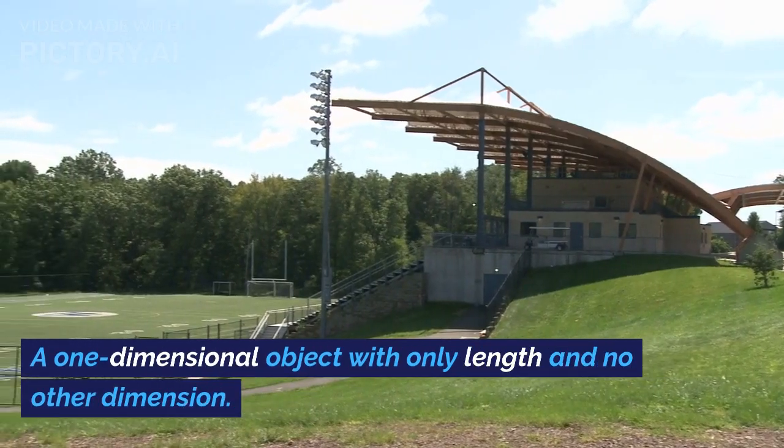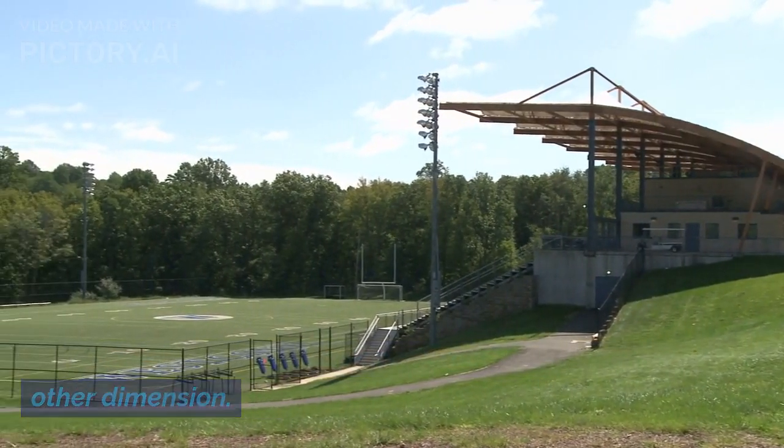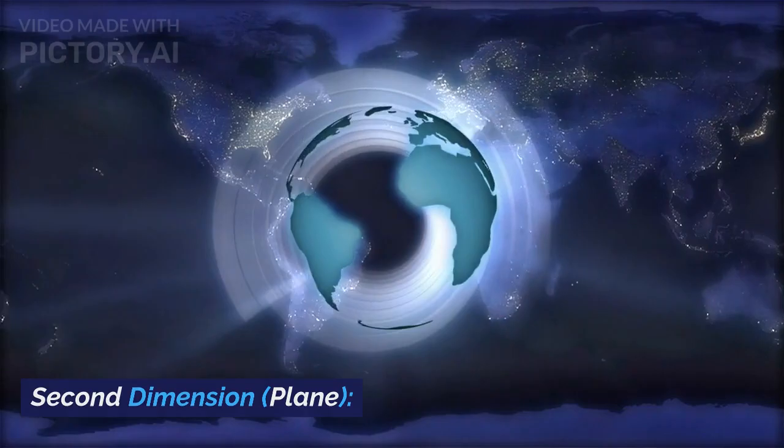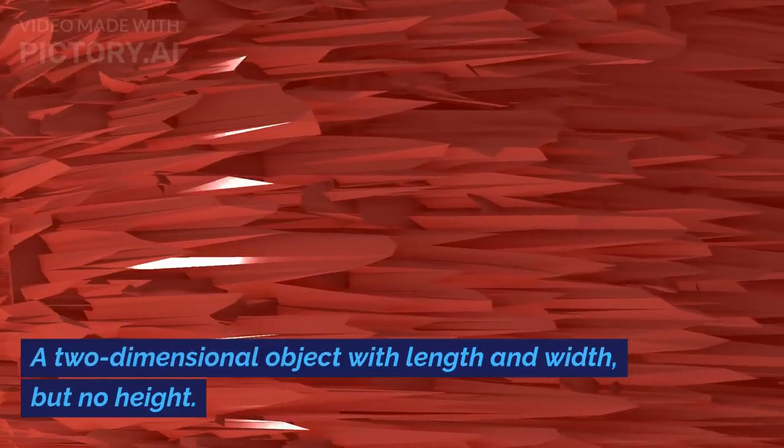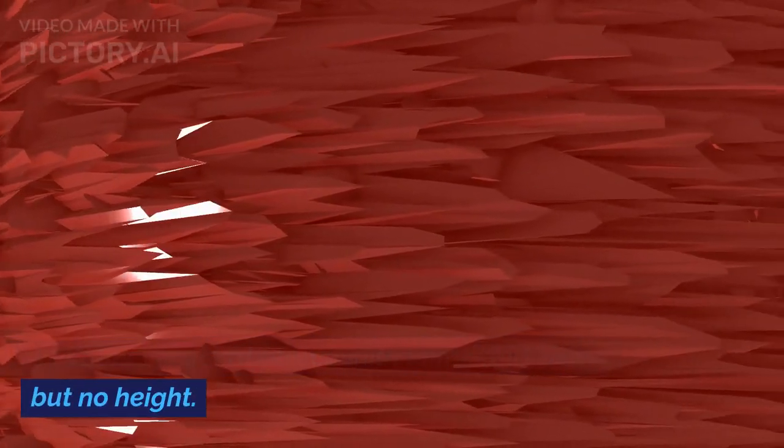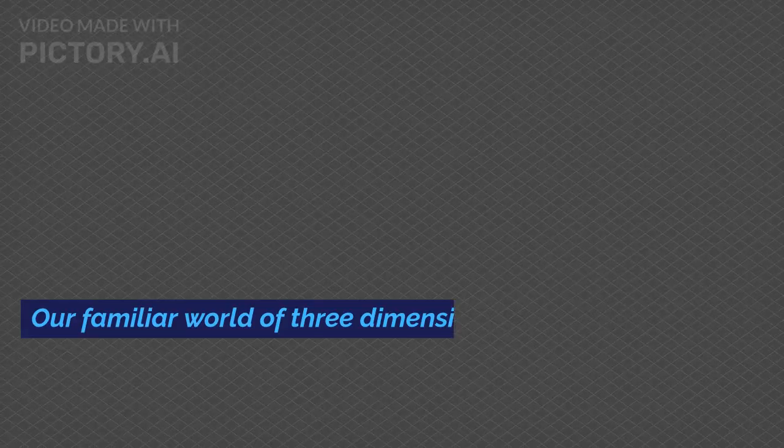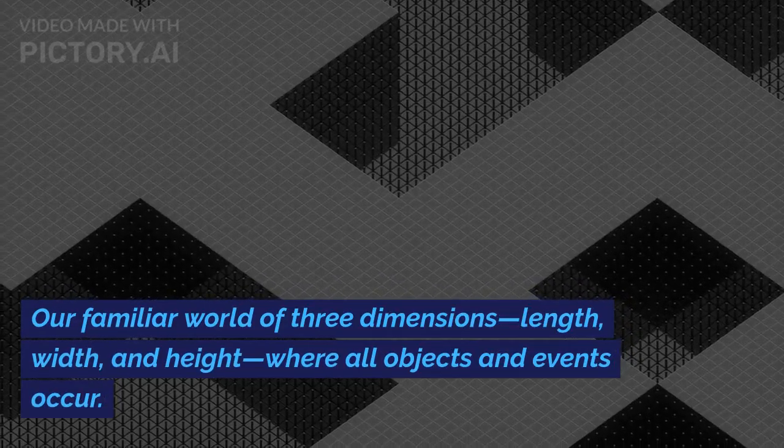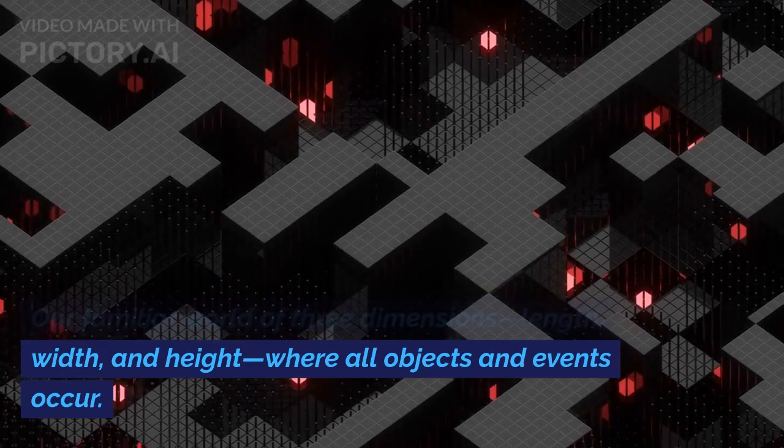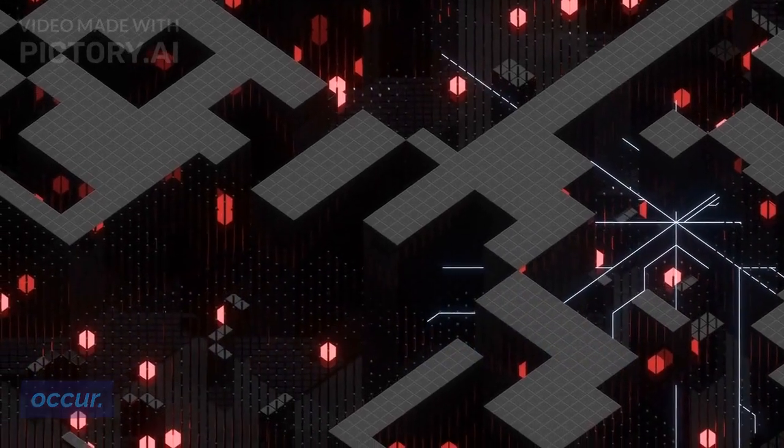Second dimension: plane - a two-dimensional object with length and width, but no height. Third dimension: space - our familiar world of three dimensions: length, width, and height, where all objects and events occur.